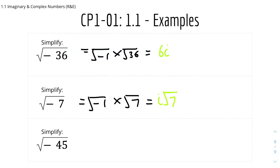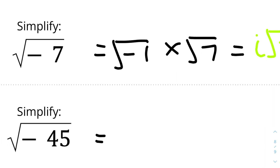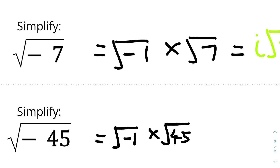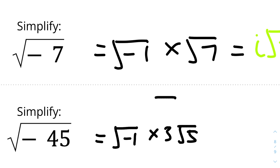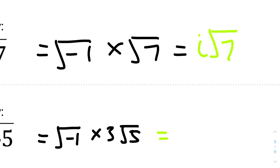Lastly, simplify √(−45). We split √(−45) into √(−1) × √45. Now √45 = √9 × √5 = 3√5, since 9 × 5 = 45 and √9 = 3. So we have √(−1) × 3√5. Since √(−1) = i, the answer is 3i√5 — or equivalently 3√5 i.